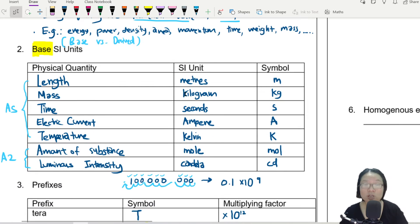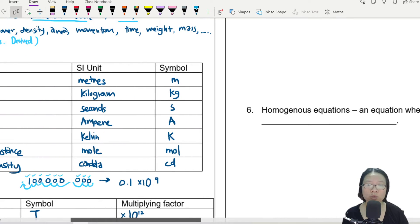What you need to understand about base SI units is that this is a limited list. So anything that is not on this seven is not a base SI unit unless the scientist decides otherwise and we will then be informed as school teachers. But right now, anything that's not in this seven are not base SI units.